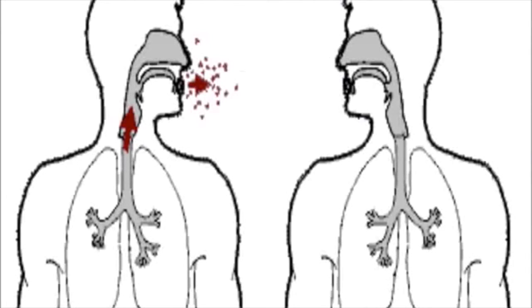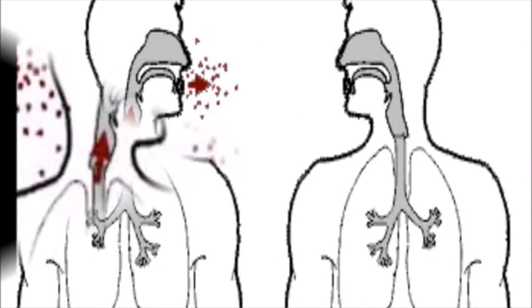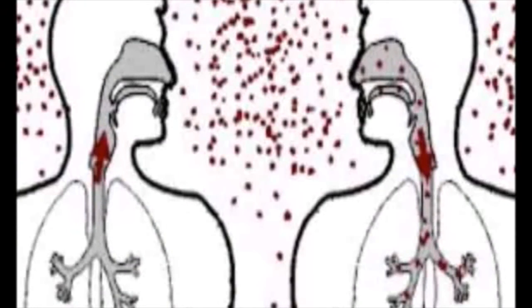A communicable disease is an illness spread by contracting microorganisms. All people, food, animals, and air can carry dangerous pathogens that spread easily from one to the next.